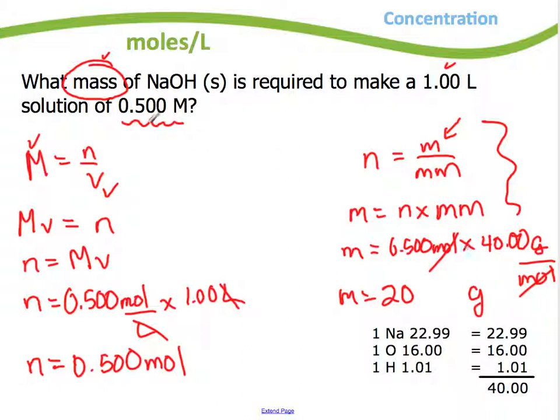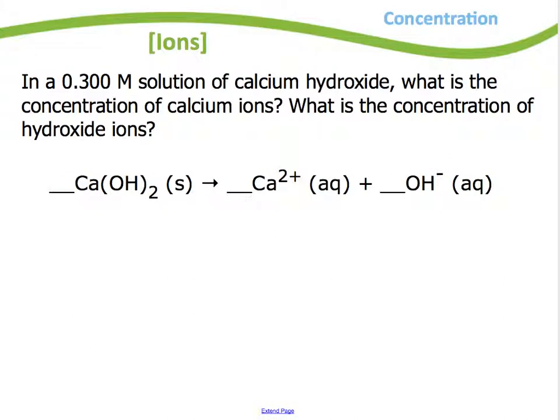Again, I have to worry about sig figs here. 3 and 3, so I need to write 3. So far I only have 2, so I need to write 20.0. That'll give me 3 sig figs. So that's a way of using the molarity formula to help you find mass. You'll want to practice a number of those kind of questions on the worksheet or the online quiz or from the textbook, just so you get comfortable using those two formulas.